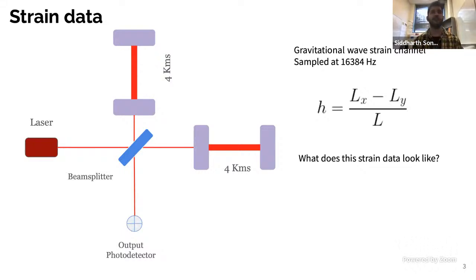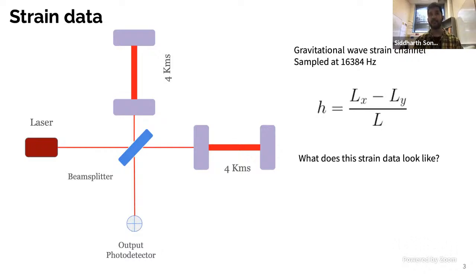This is a very simplified picture of the detector. We have a laser, two four-kilometer arms, a beam splitter, and output photodetector. The essential idea is that a gravitational wave interacts with the system, changes the length of the arms, and we read the strain in the gravitational wave channel, which is sampled at 16 kilohertz. It's more complicated because a lot of details go into calibration, and I've included a paper on calibration in the references.